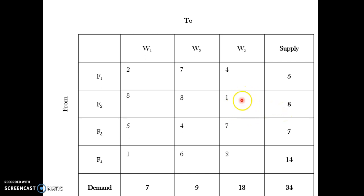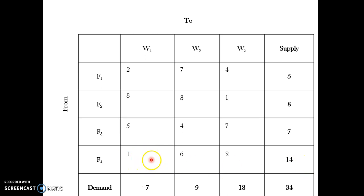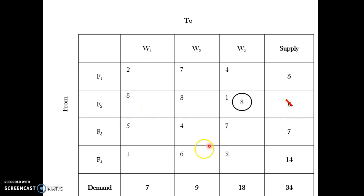I call this an opportunity cell because the minimum cost lets me capitalize on it. For the other minimum cost cell F4→W1: F4 produces 14 units while W1 requires only 7, so I cannot allocate all 14 here. Since the two minimum cells are tied, I pick the one with the maximum allocation. I allocate 8 units at F2→W3 and cross off F2, as it has no more supply.